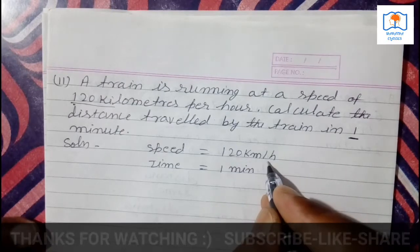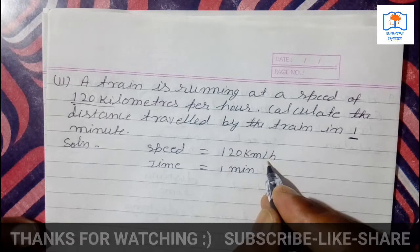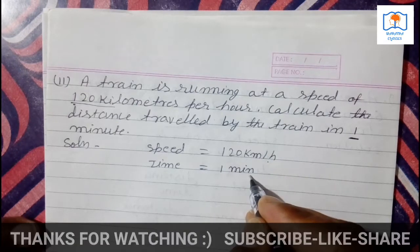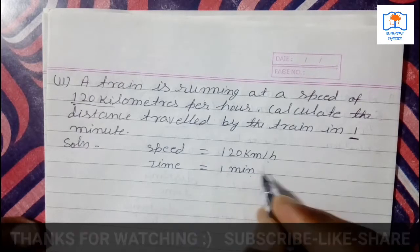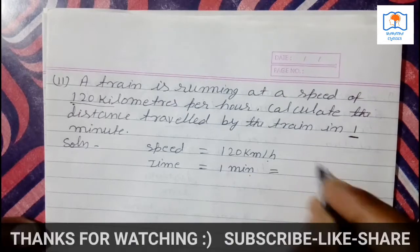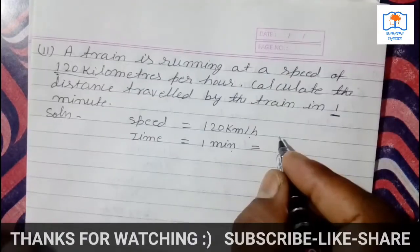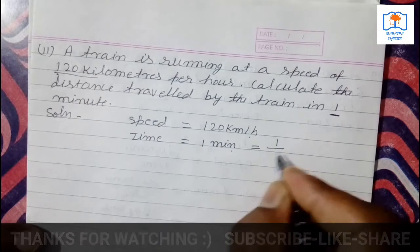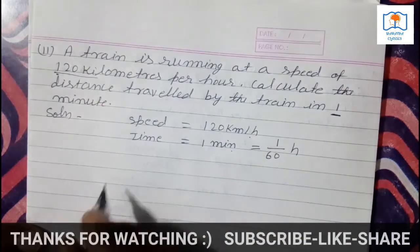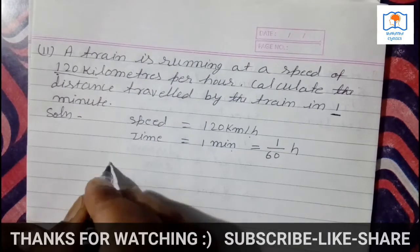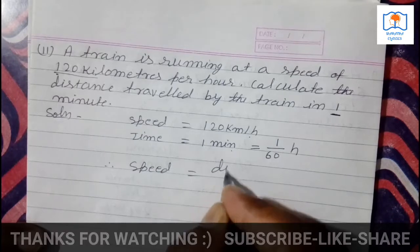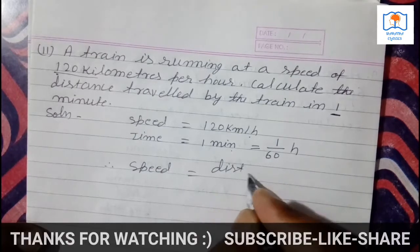In speed, time is in hours. But here time is given in minutes. So it must be converted. Time is converted because the units must match. 1 minute equals 1 by 60 hour. Speed is 120 km per hour.